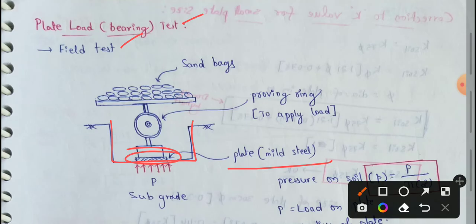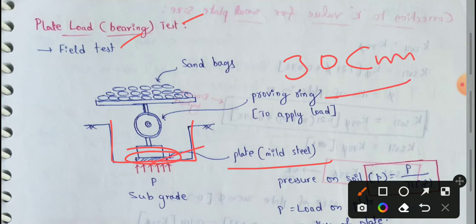Different types of diameter plates are available: 30 cm diameter, 45 cm, 60 cm, and 75 cm diameter. These plates are available, but most commonly we will use the 30 cm diameter plate.